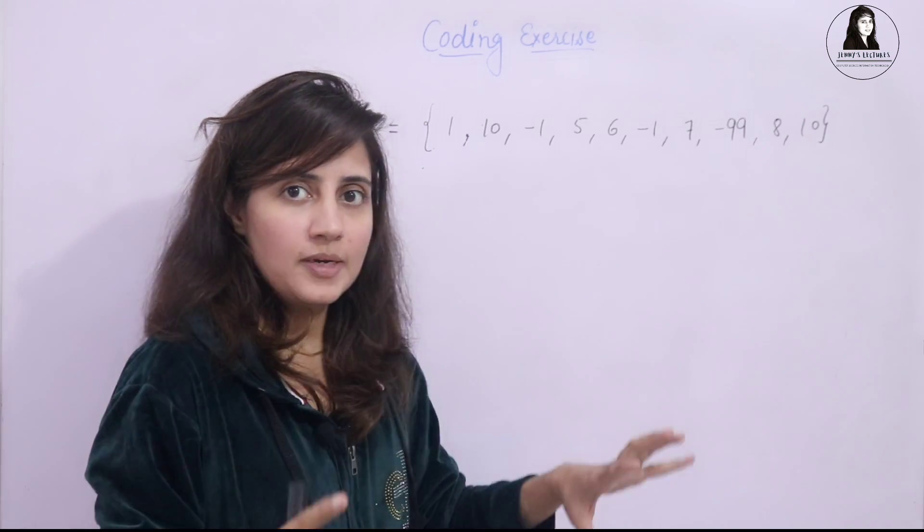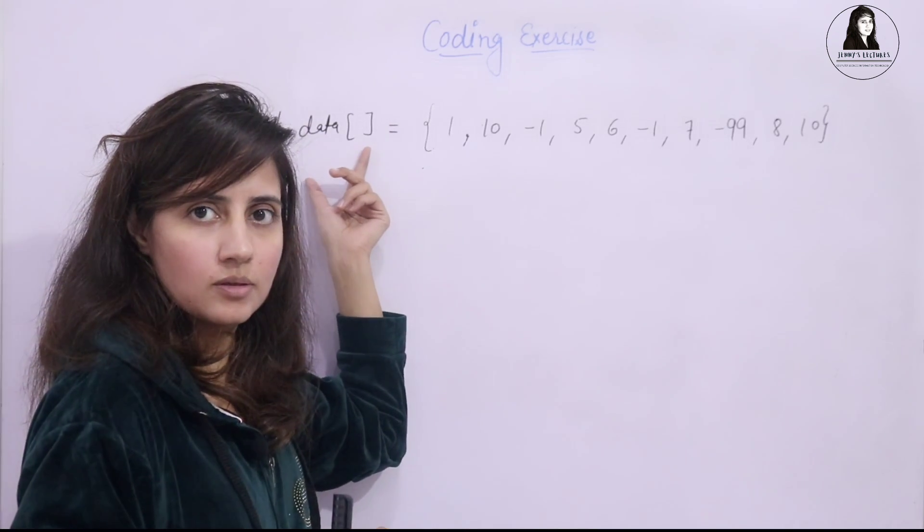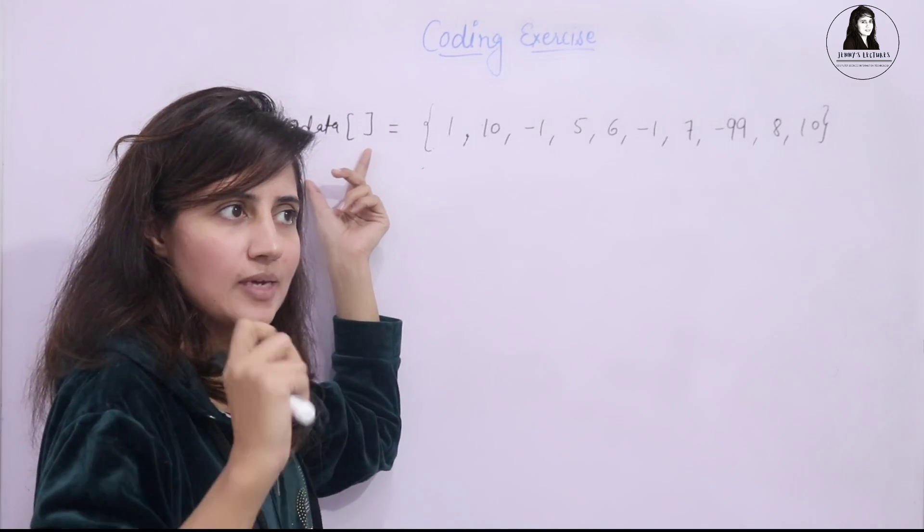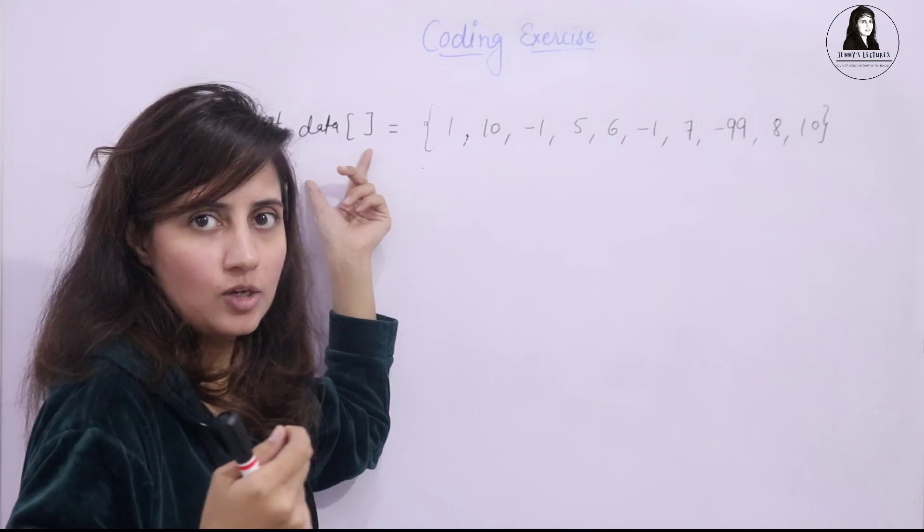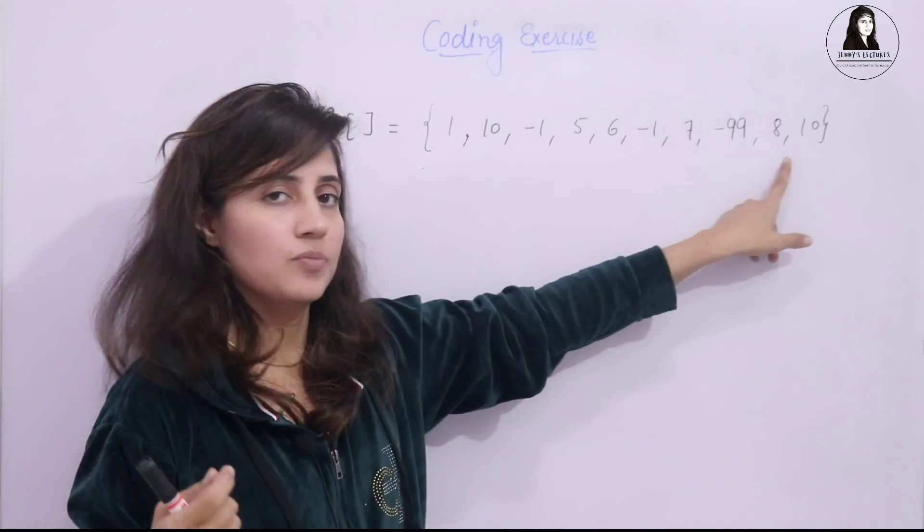suppose we have some data in an array. Array is simply a collection of homogeneous data types. We have an integer array and this is the data of this array.